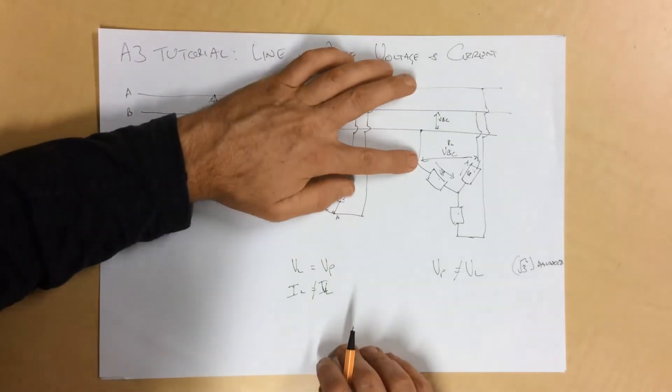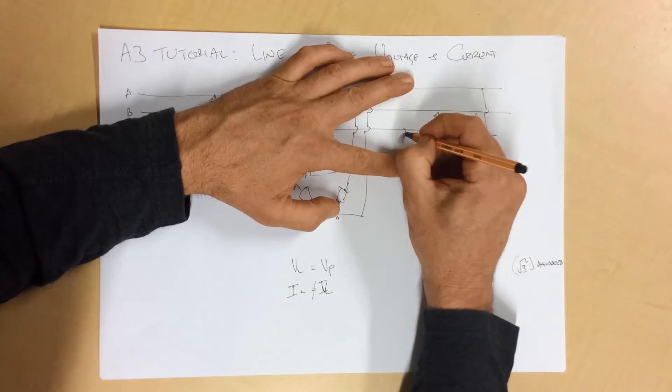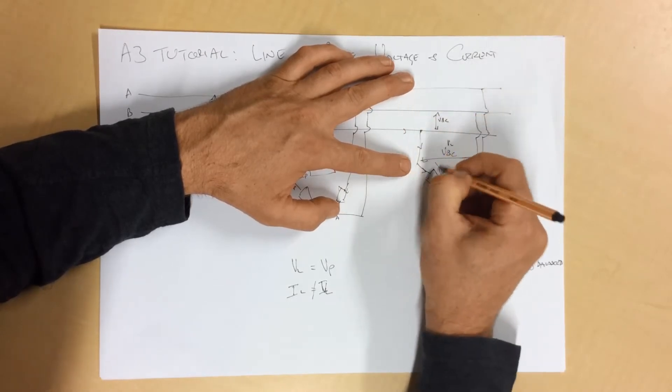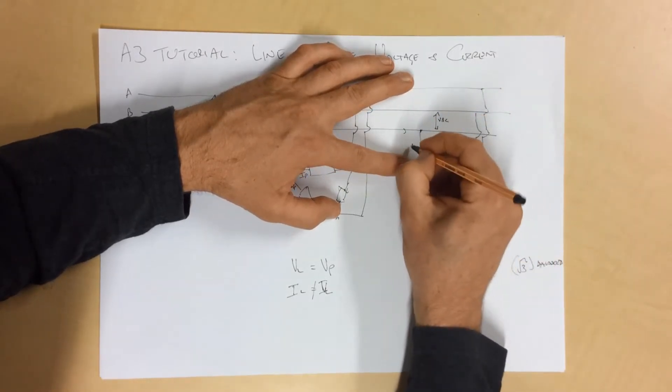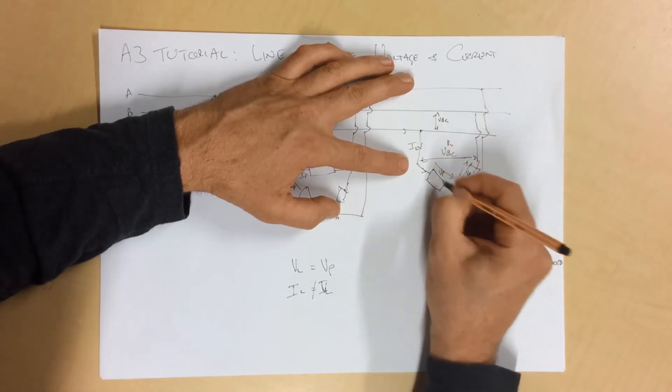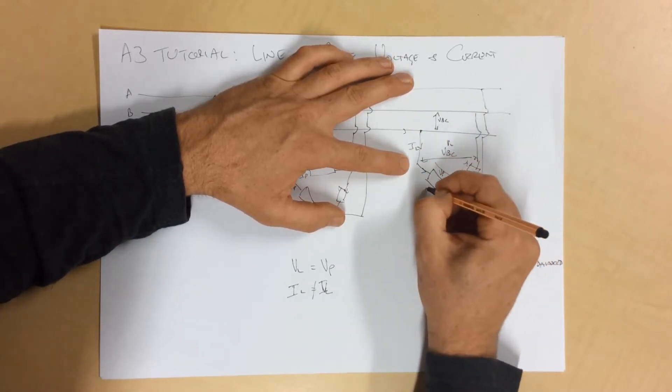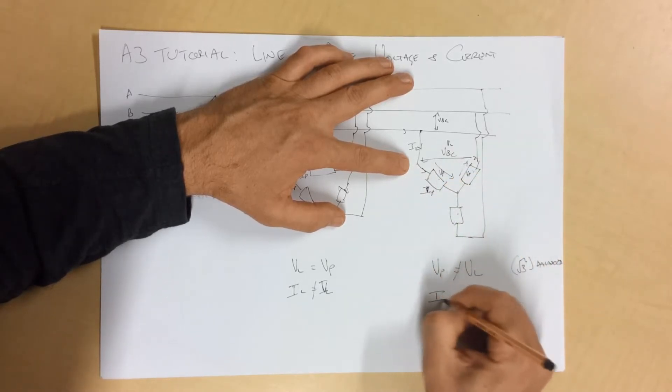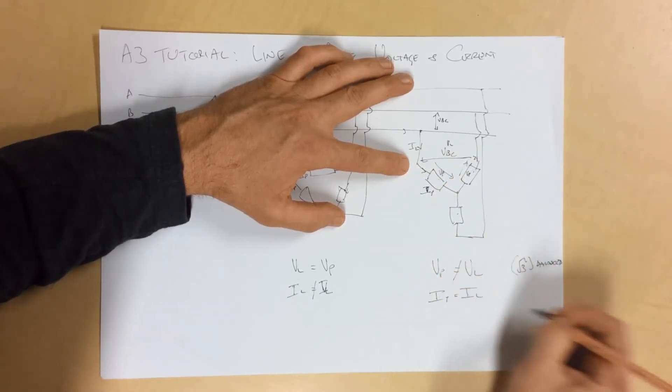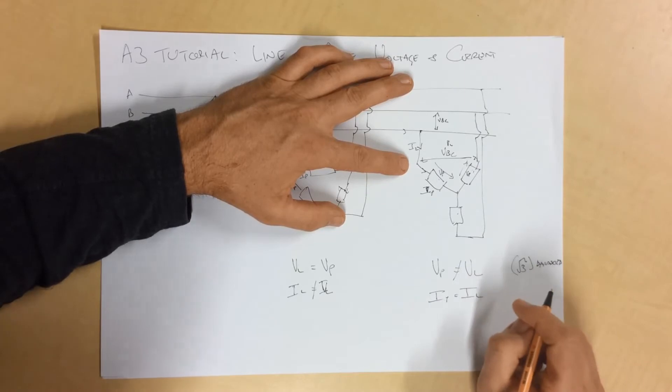If we pop over to here, to our star system, we can see that our line current flowing here flows through here. So, this is our line current, and it is the same as a current flowing through our phase winding. And once again, that relationship of root 3 applies.